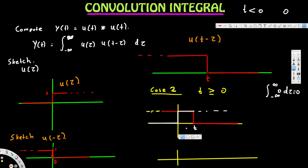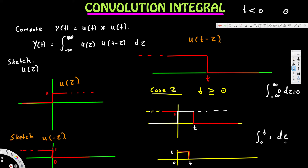The overlapping non-zero region is from 0 to t with height 1. So the convolution integral from negative infinity to infinity of u(τ) times u(t minus τ) dτ reduces to the integral from 0 to t of 1 dτ, which equals t. So for case 2, when t is greater than or equal to 0, the result is t.